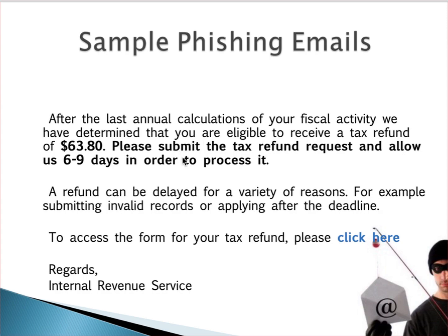A sample phishing email might read: 'After the last annual calculation of your fiscal activity, we have determined you are eligible to receive a tax refund. Please submit a tax refund request — refund could be delayed. To access your tax refund form, please click here.' Once the user clicks that link, it leads to a fraudulent website used to steal information. Other signs include generic messages: legitimate brands address customers by name and reference specific order numbers, whereas a vague message like 'there is an issue with your account' with no further detail is a red flag.